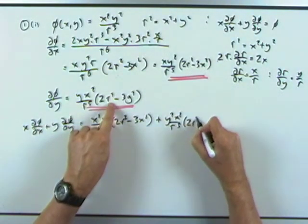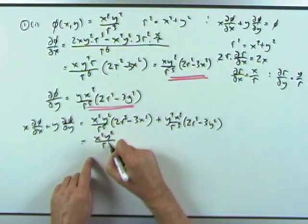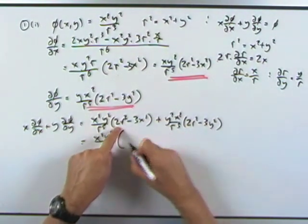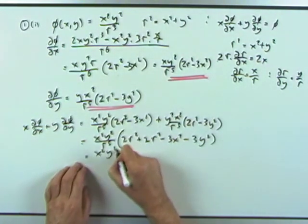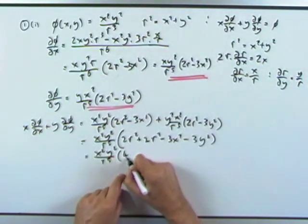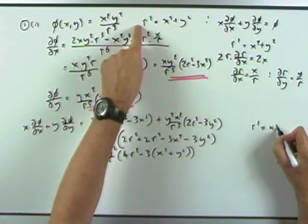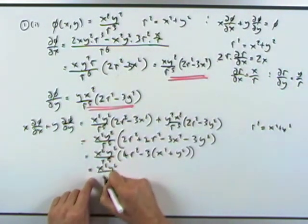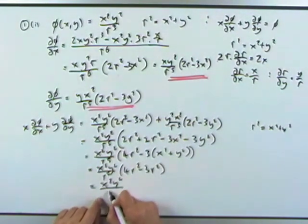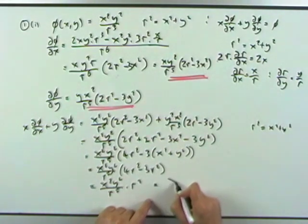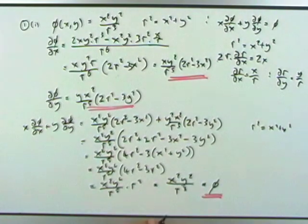and y times the second gives y squared x squared over r to the 5 times 2r squared minus 3y squared. They've both got x squared y squared over r to the 5 in common. The first has 2r squared and the second also has 2r squared, giving 4r squared total, minus 3x squared minus 3y squared, which is minus 3 times x squared plus y squared. But r squared equals x squared plus y squared, so that's 4r squared minus 3r squared, which equals r squared. So the result is x squared y squared over r cubed, which is the original function phi. Question 1 part 1 done.